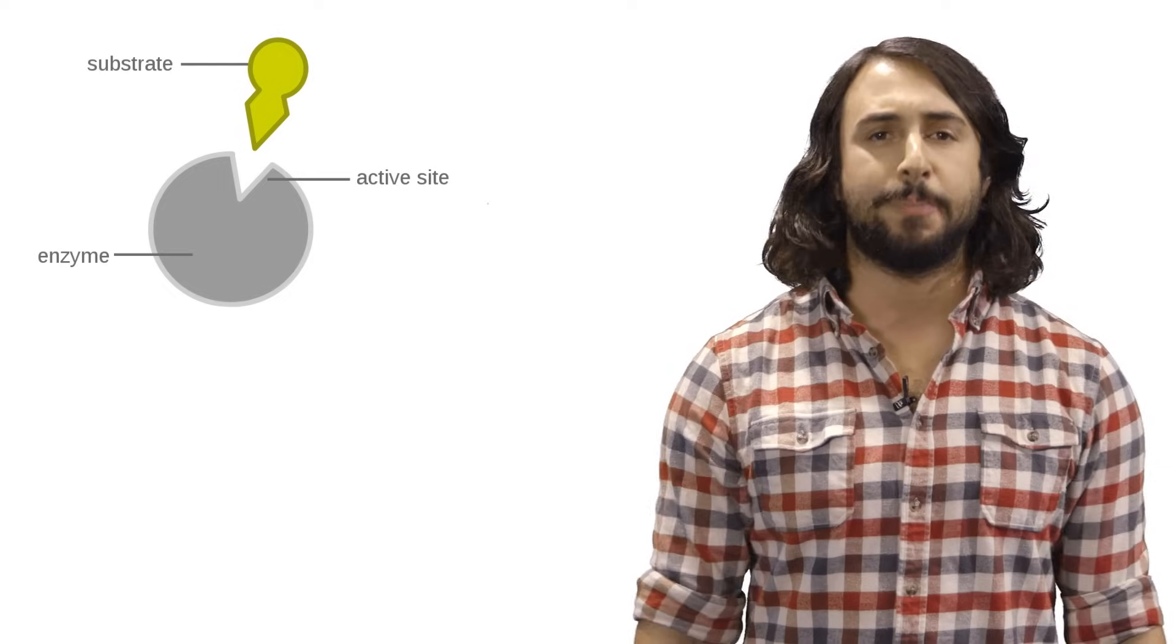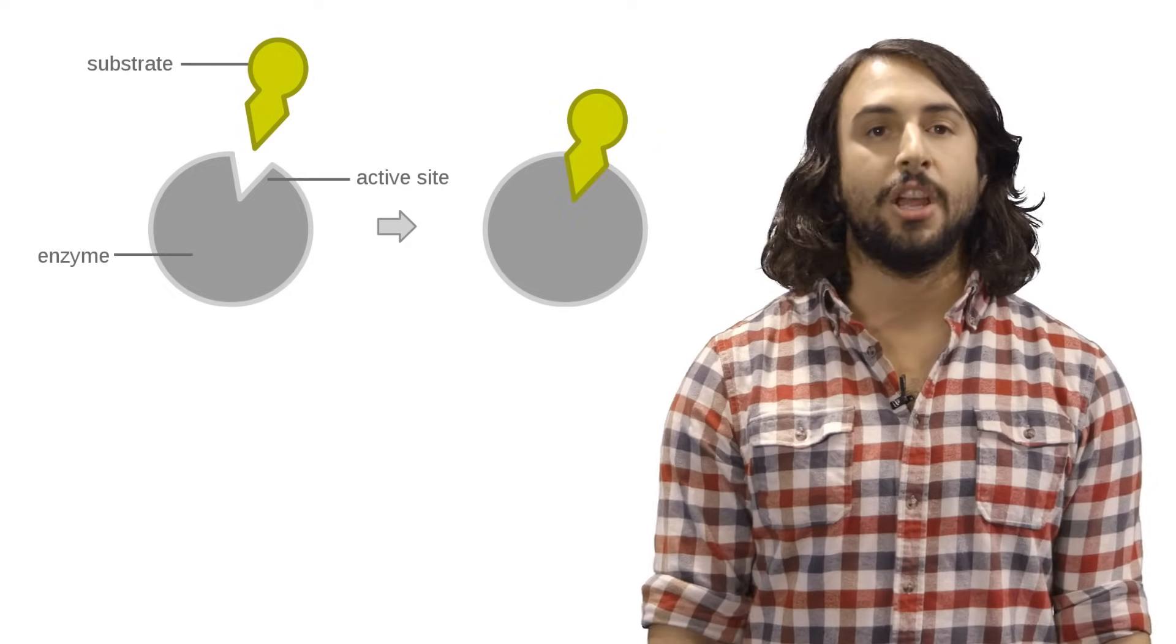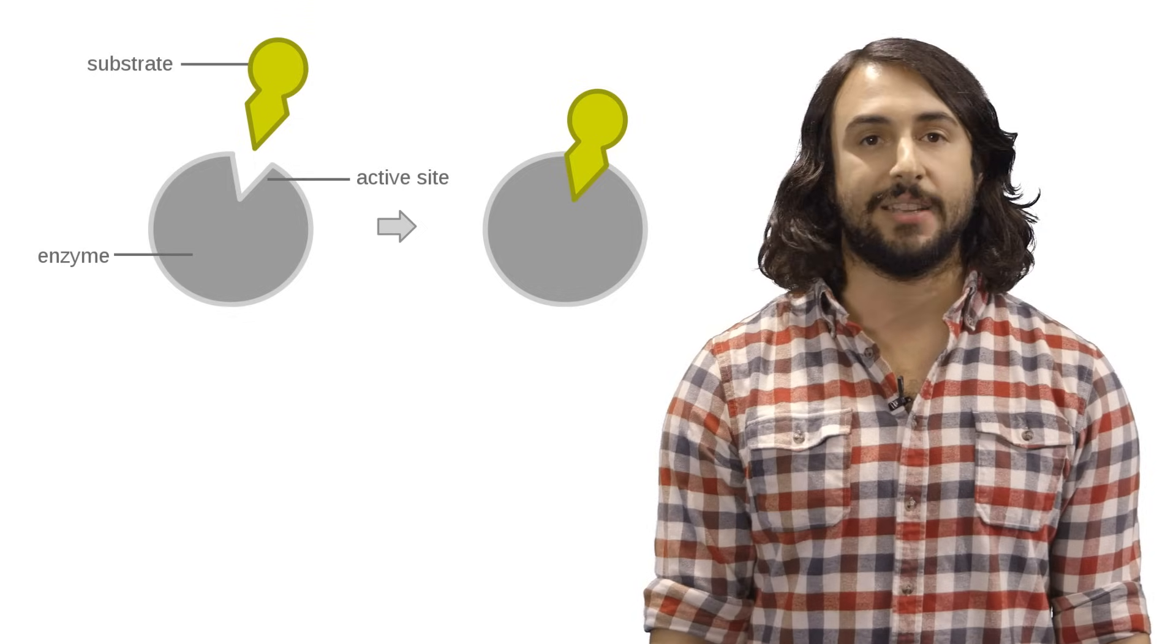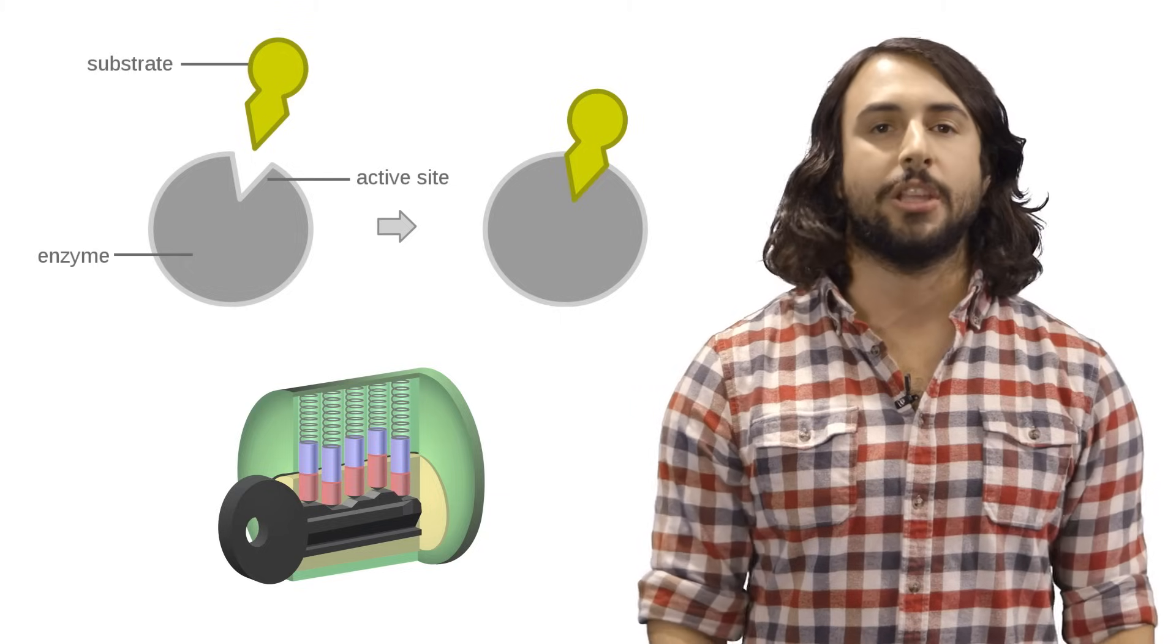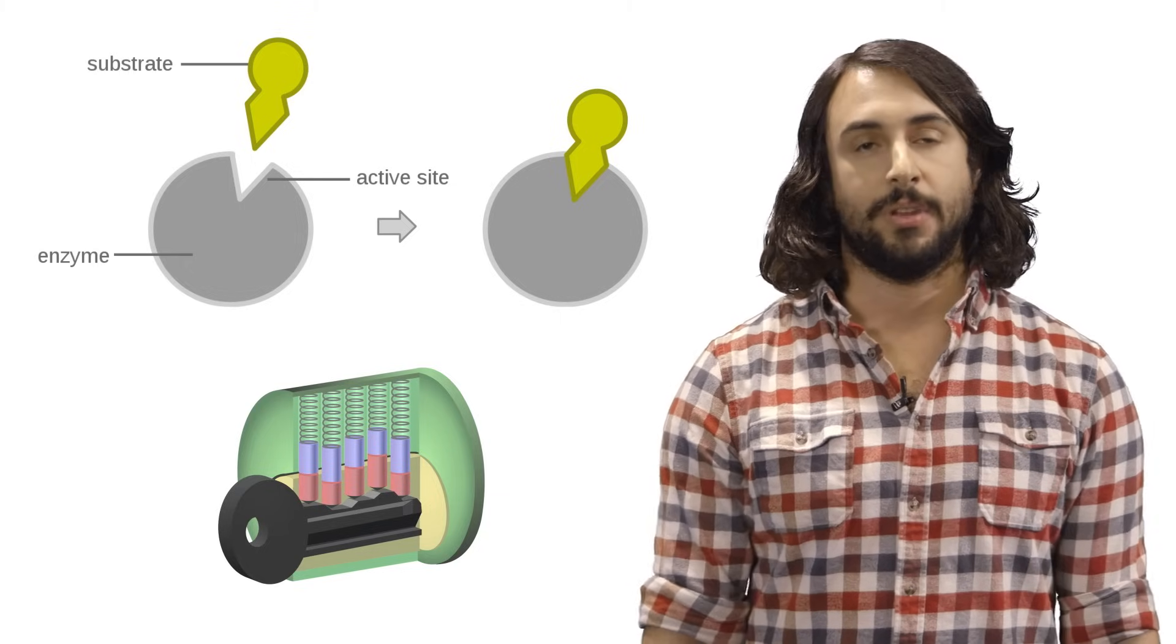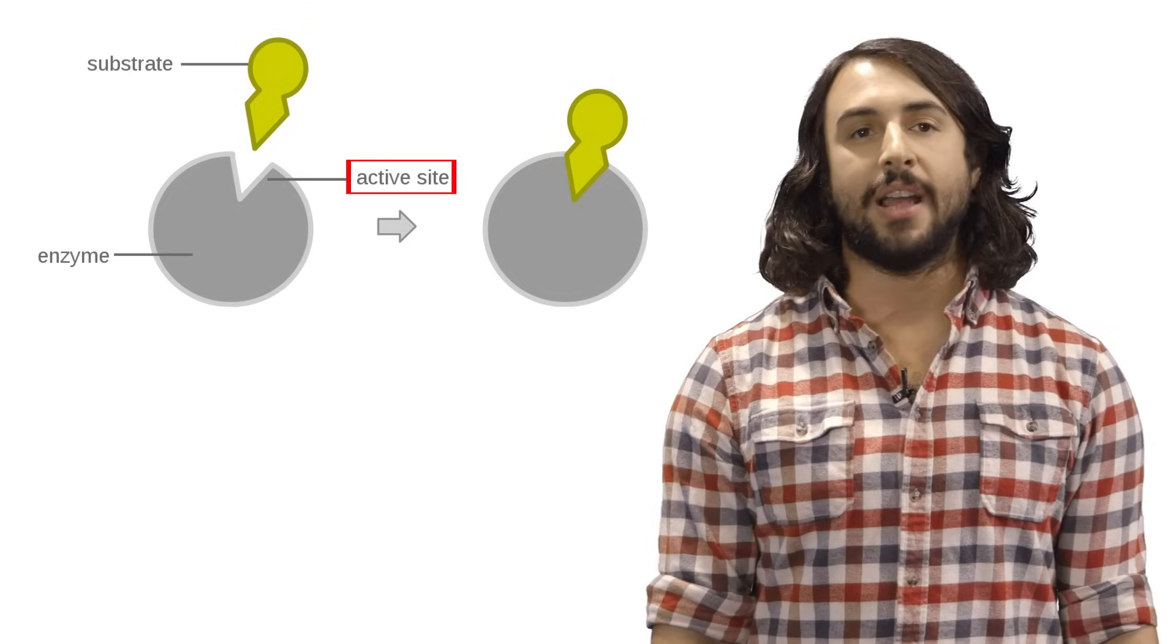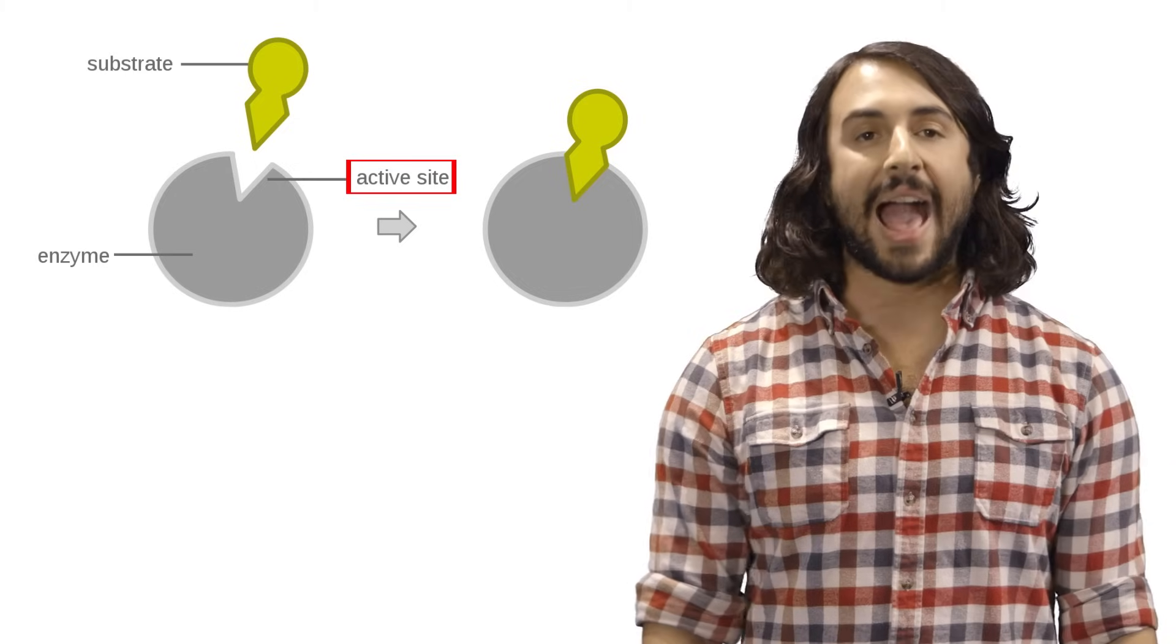Well every enzyme has a specific substrate, and the enzyme recognizes its substrate with extremely high specificity, so it's kind of like a lock and key, where a specific molecule is the key that activates the enzyme's function. There is a specific area on the enzyme that the substrate will bind to, which is called the active site.